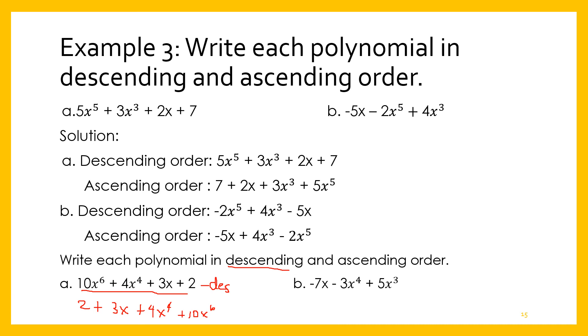And then for letter B, we are going to write it in ascending or descending order. We have -3X⁴ + 5X³ - 7X. This is descending order. In ascending order, that would be -7X + 5X³ - 3X⁴.